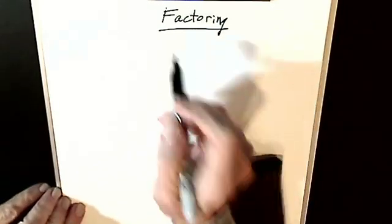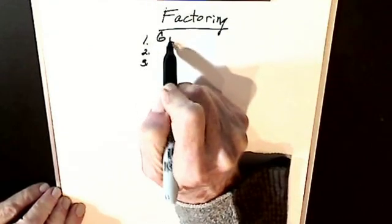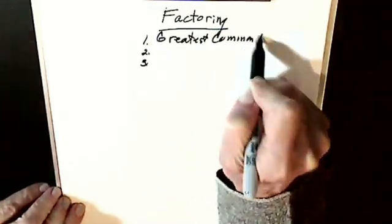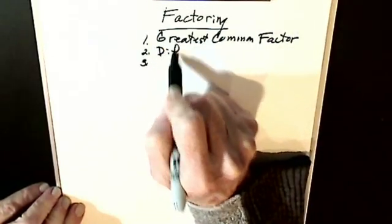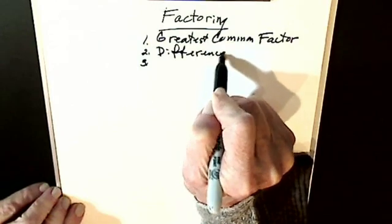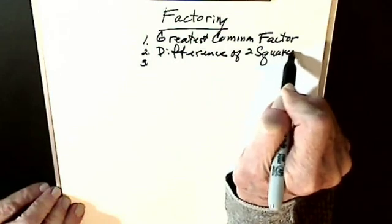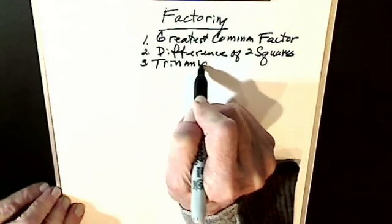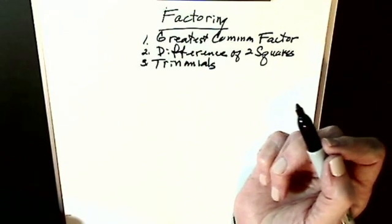Hi. Now we're going to start factoring. There are three types of basic factoring. One is called greatest common factor. The second is called difference of two squares. The third is called factoring trinomials. So now in this video we're going to start with greatest common factor.